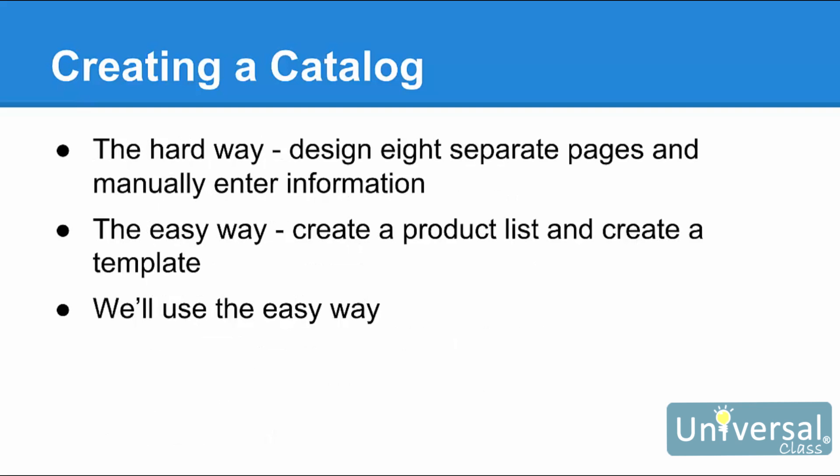There are two ways to do this. The hard way involves designing eight separate pages and manually entering everything using techniques learned earlier in the course. The easy way is to compile the product list and then create a single template using the catalog tools. When finished, Publisher will automatically take all the information in the product list and insert it into the template, creating eight individual pages with three products on each page. We're going to show you the easy way in this lesson.